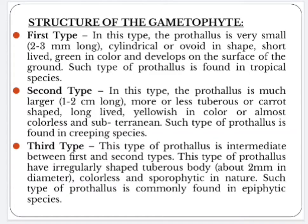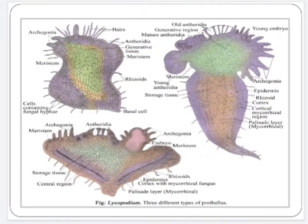Since the prothallus is homothallic, it bears both male and female sex organs — that means antheridia and archegonia — in a single gametophytic plant body. Let us see the diagram showing three different types of prothallus: first type, second type, and intermediate or third type.